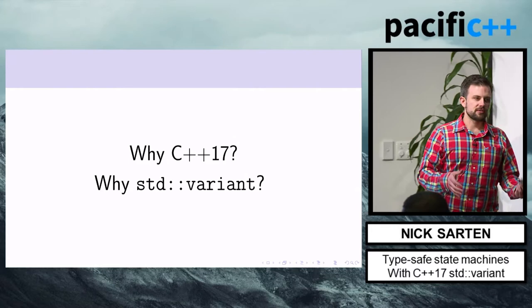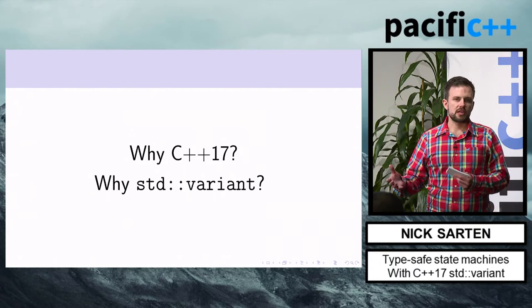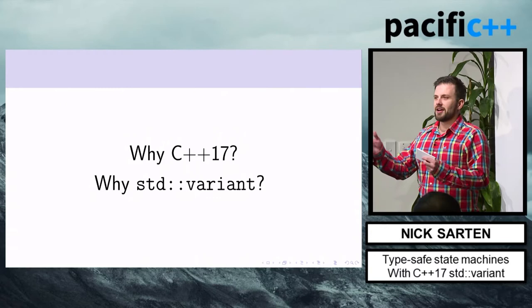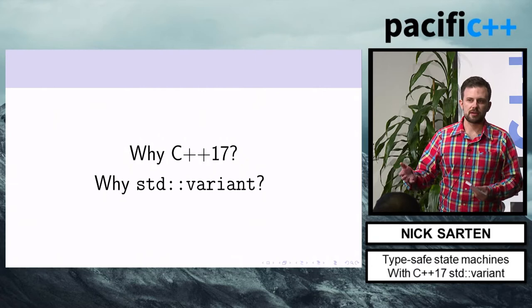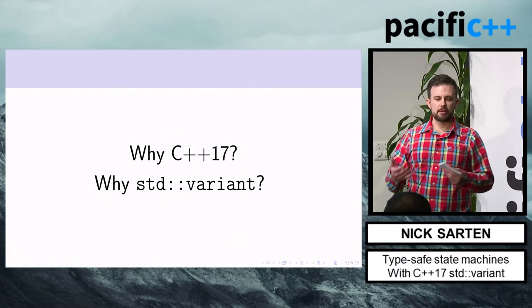Why std::variant specifically? For me, std::variant is as significant to C++17 as std::unique_ptr was to C++11. I think it will change the way we think about type safety and programming with types, in the same way that std::unique_ptr changed how we think about memory management.